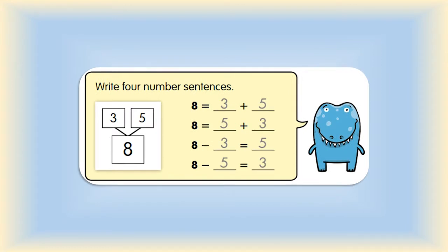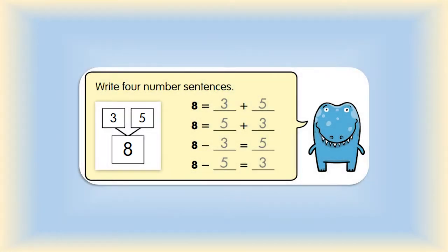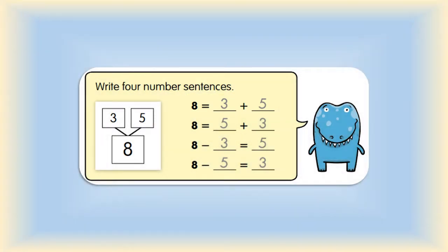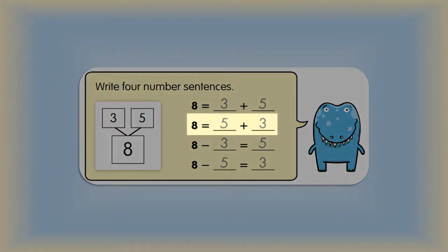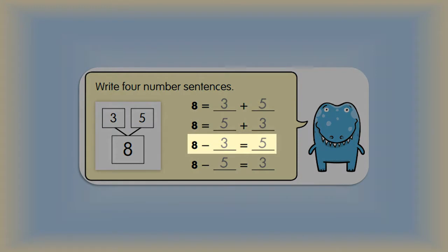Here are Dino's Number Sentences. This number bond is showing the whole number as 8 and each part as 3 and 5. Dino's first number sentence is 8 equals 3 plus 5. Also, 8 equals 5 plus 3. That same number bond can be used to show subtraction sentences, like 8 minus 3 equals 5 or 8 minus 5 equals 3.